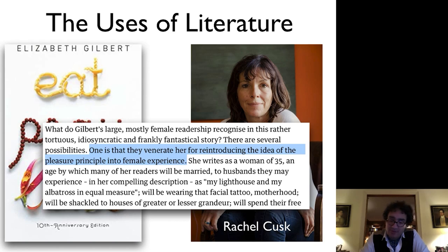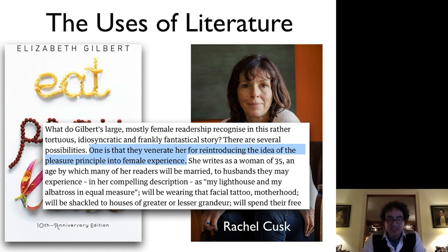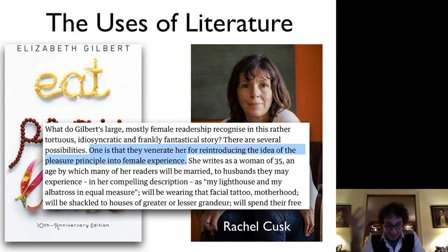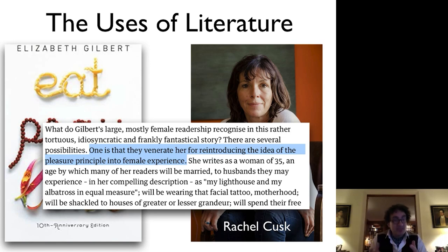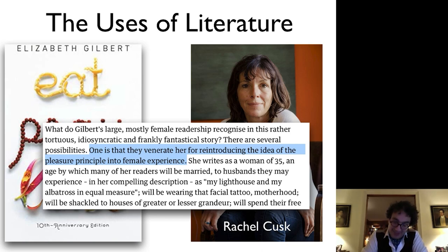If people aren't using books to understand the nature of death or to achieve erotic intimacy, what are they using books for? One answer is that they're trying to use books like Eat, Pray, Love to understand the nature of death and failing because these books are kind of crappy. But the goal of this lecture is to understand these choices without overlaying a normative frame — to look at books more through Cusk's sense, as fundamental objects in the world, and ask about their existence as material objects and how they circulate. That investigation will take us into some surprising places.